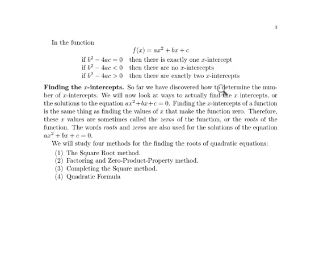In a previous video we observed that in the function f(x) equals ax squared plus bx plus c, if the discriminant b squared minus 4ac is zero, then there is exactly one x-intercept. If it's less than zero, then there are no x-intercepts, and if it's greater than zero, there are exactly two x-intercepts.